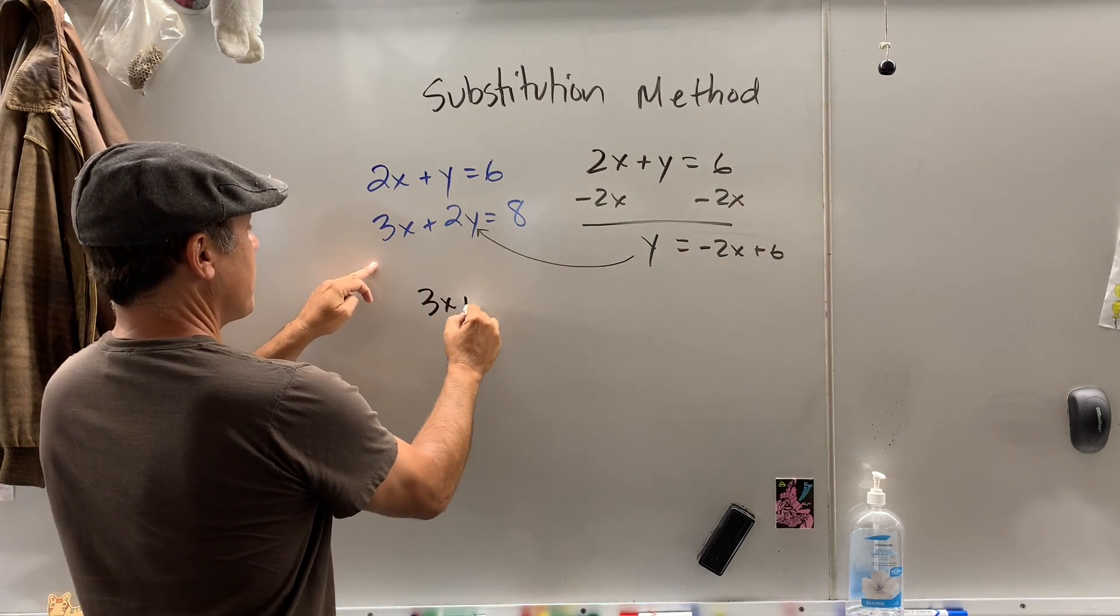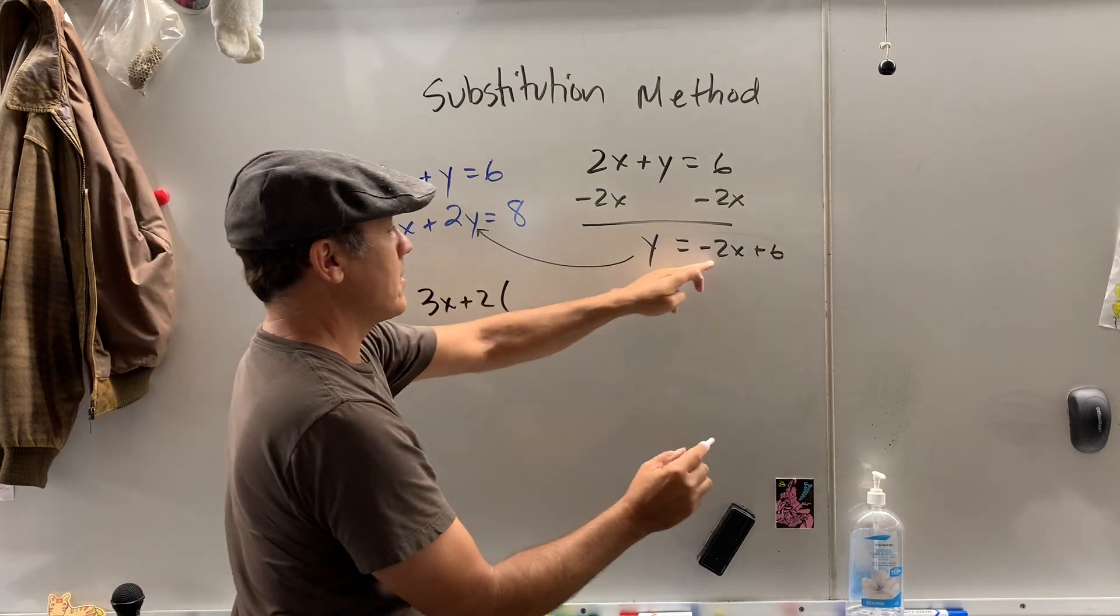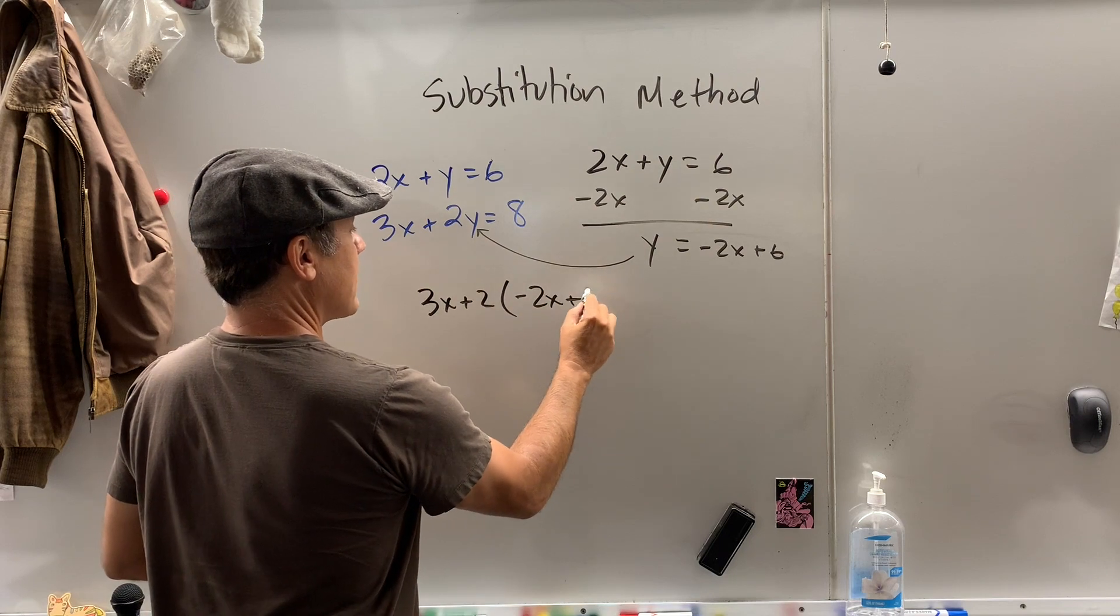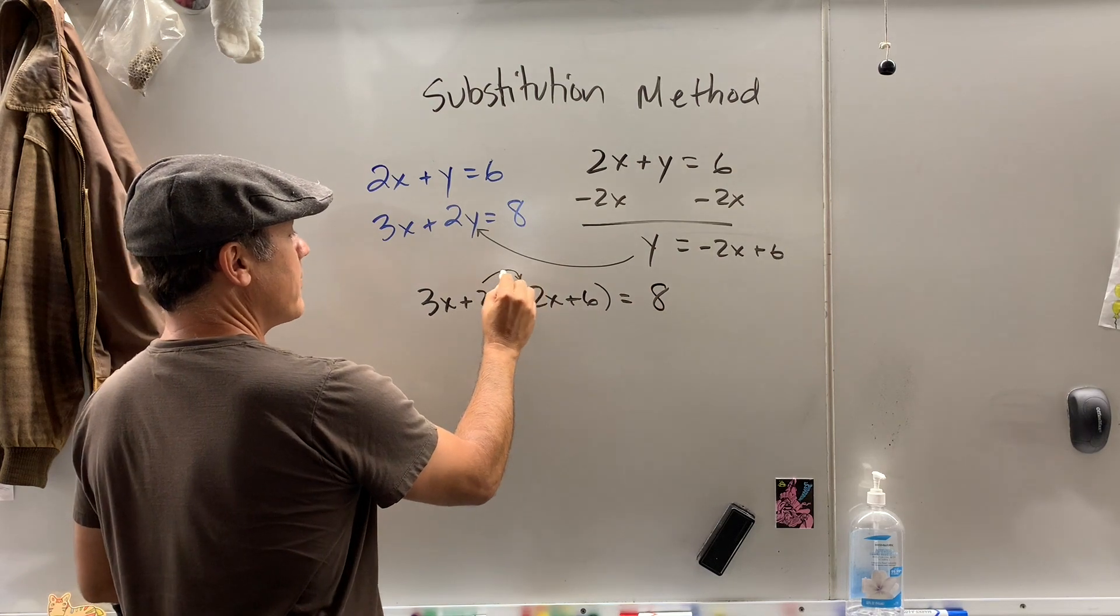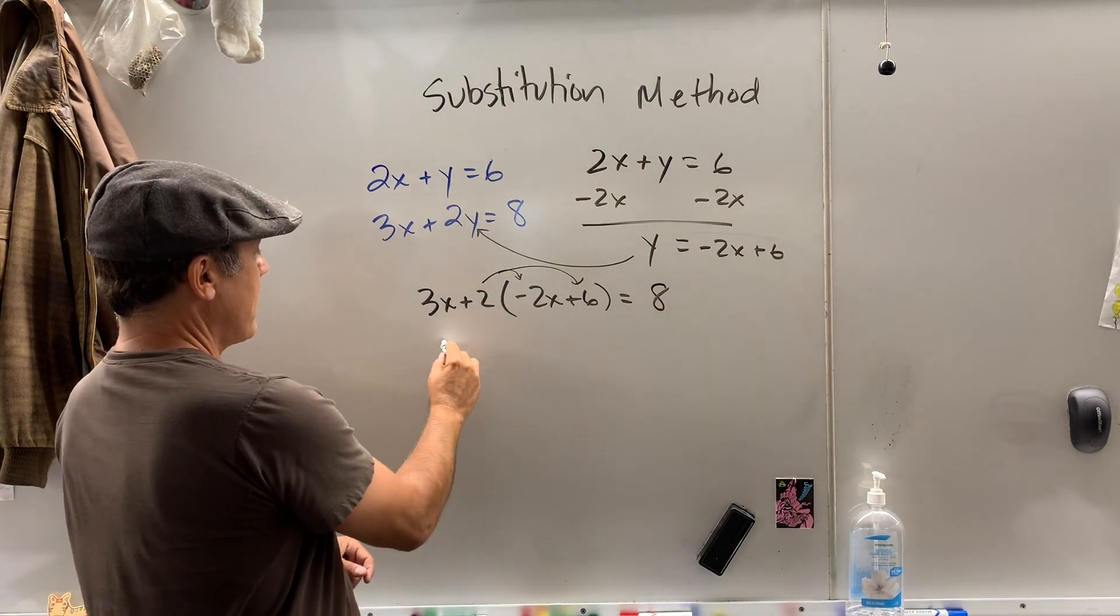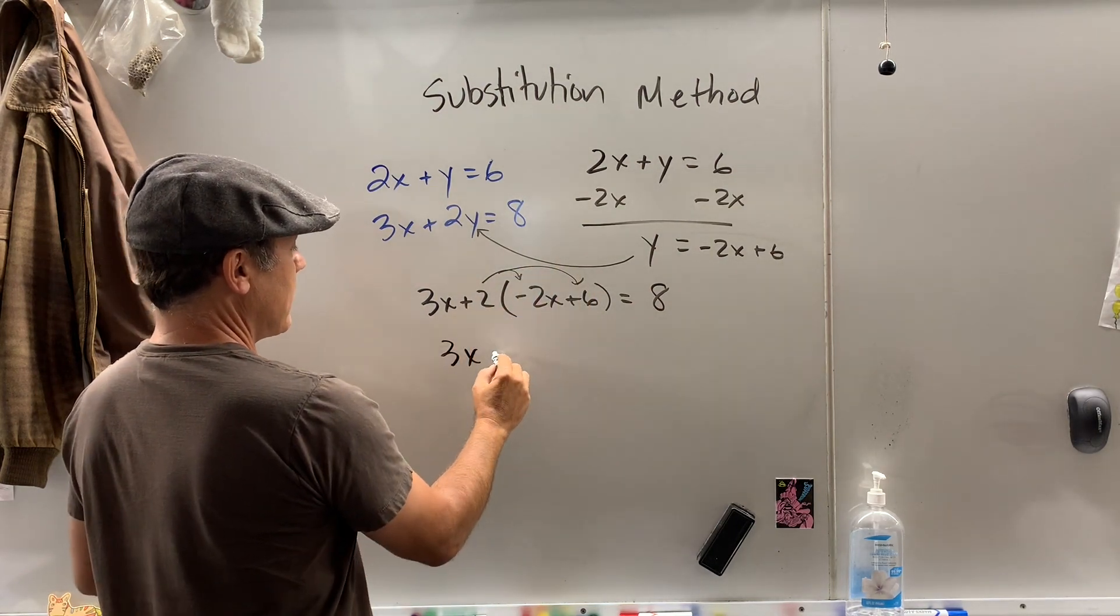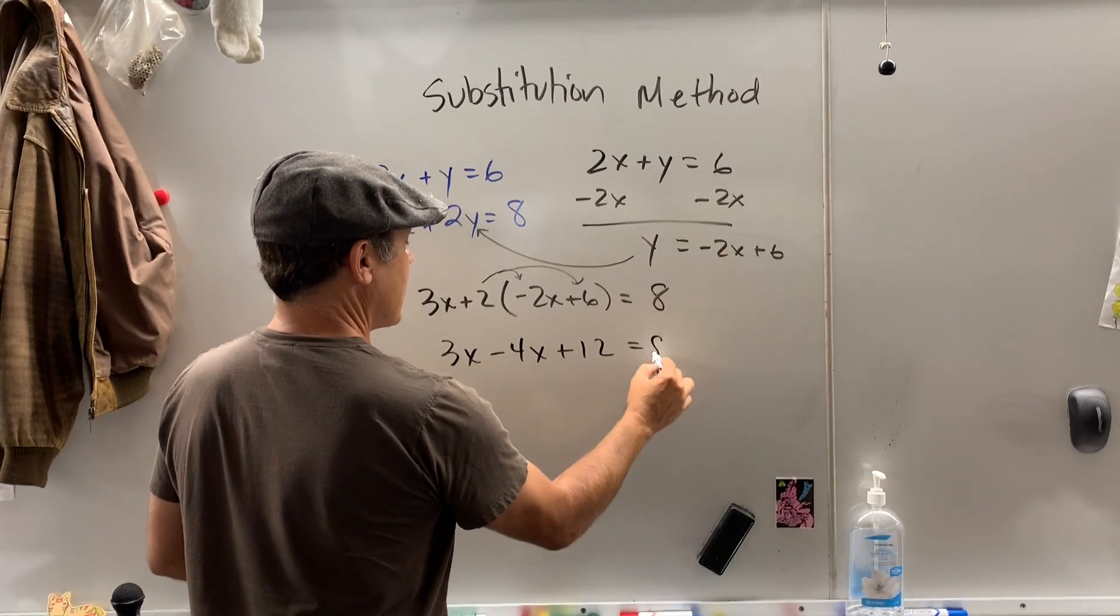So if I take 3x plus 2, parentheses, negative 2x plus 6, that has to equal 8. Okay. And then I do Mr. Distributive Property. Okay. 3x, 2 times negative 2 is negative 4x plus 12 equals 8.